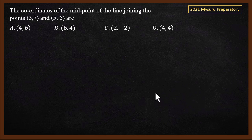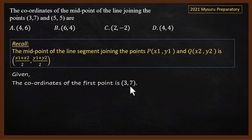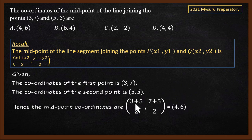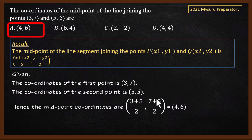This is another midpoint question from a Mysore preparatory exam: what are the coordinates of the midpoint of the line joining (3, 7) and (5, 5)? Using the formula: x = (3+5)/2 = 4; y = (7+5)/2 = 12/2 = 6. So the correct answer is (4, 6). Be careful — they may try to trick you by giving a similar answer like (6, 4), swapping x and y.